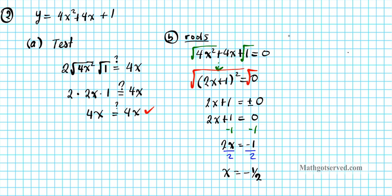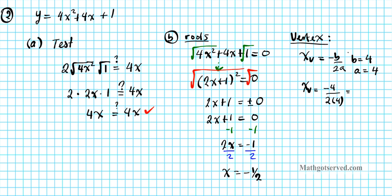For the x-coordinate of the vertex, we use the formula negative b over 2a. In this problem, b is 4 and a is 4, so it's negative 4 over 2 times 4, which simplifies to negative 4 over 8. Dividing top and bottom by 4 gives negative one half. For the y-intercept, we look at the value of c in the standard form — c is 1, so the y-intercept is equal to 1.